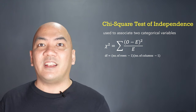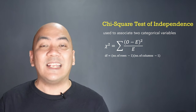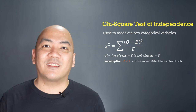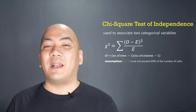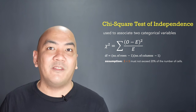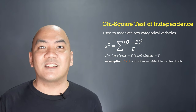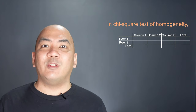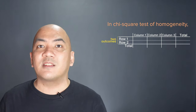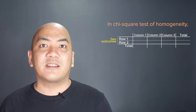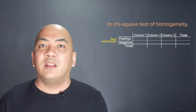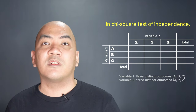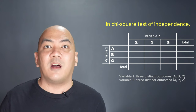The test statistic in the chi-square test of independence is identical to the chi-square test of homogeneity. Similarly, the chi-square test of independence assumes that the expected count must be at least 5 in at least 20% of the number of cells in the cross-tabulation. However, unlike the chi-square test of homogeneity, the chi-square test of independence may be applied even if both variables have more than two possible distinct outcomes.